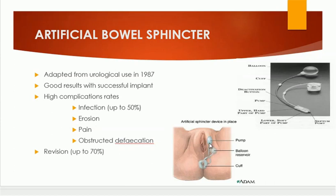The pump is used to transfer fluid from the reservoir, and when we require that there should be no fecal soiling, the cuff is inflated around the anus sphincter. Artificial bowel sphincter is another option for the treatment of anal incontinence.